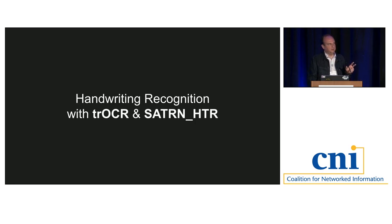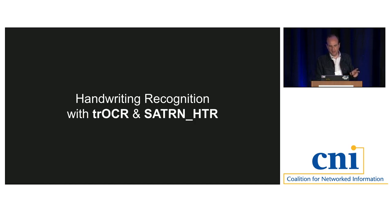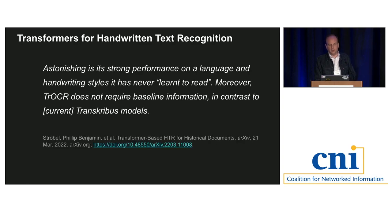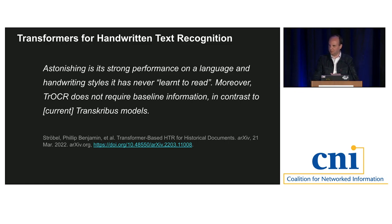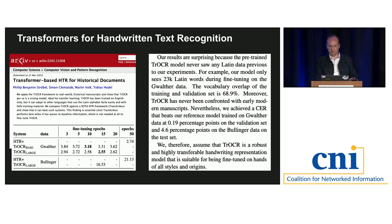One area where transformers haven't had as much impact yet — but will soon — is handwriting recognition, primarily with the TR-OCR model. Many people have used Transkribus, the EU-funded Austrian tool. In earlier versions of Transkribus you needed about 80 pages of ground truth, which was depressing if you had an 81-page journal to transcribe. What's interesting about TR-OCR and other transformer-based HTR models is that they are zero-shot — they can work on handwriting never seen before, requiring zero pages of ground truth rather than 80.